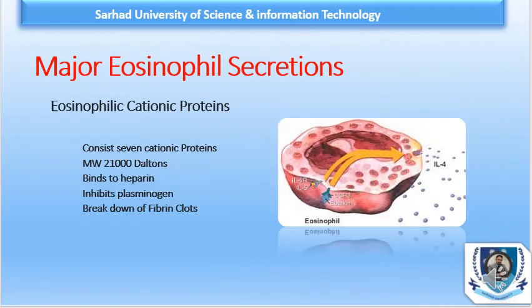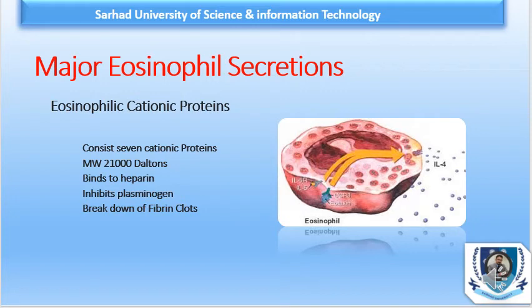Then we have Eosinophilic Cationic Protein, called ECP. ECP consists of a series of seven different cationic proteins. Some are produced by the eosinophil, but those mostly produced by eosinophil are proteins 5, 6, and 7. The most important and abundant of these seven proteins is component number 5, which has a molecular weight of 21,000 daltons. It interferes with the activity of the parasites, making them easier targets for white blood cells.